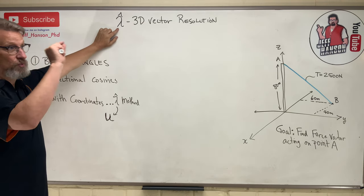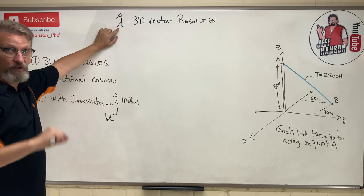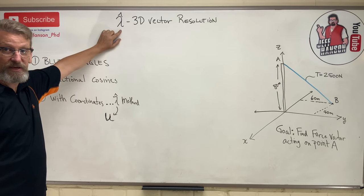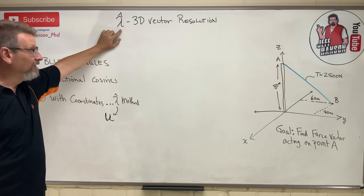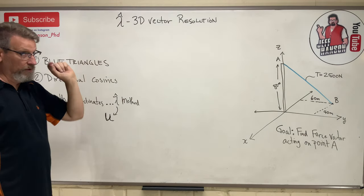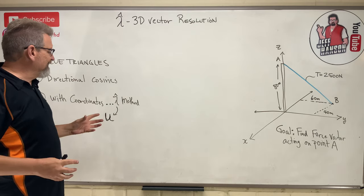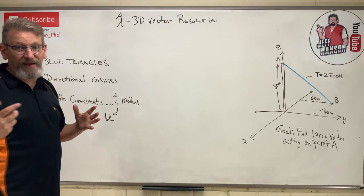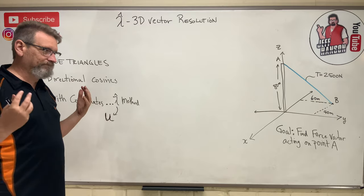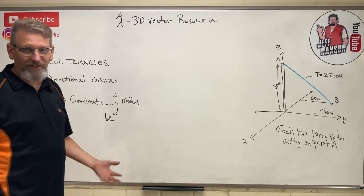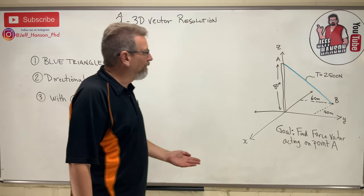But again, if I square up, square up, square up, take the square root of all the components there, I better get one because it's a unit vector, it's still a length or size, a magnitude of one. So the easiest way to show you how to use this lambda hat method is just do a problem and show you. So look at this little simple problem.